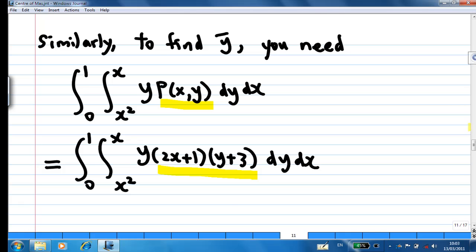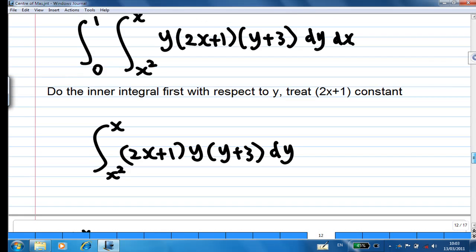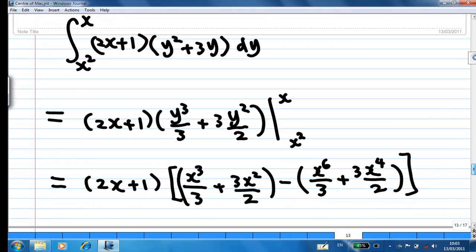So we do the inner integral first with respect to y. You treat 2x plus 1 as constant. Multiply y and y plus 3, you get y² plus 3y. And then you integrate. Integrate y², you get y³ over 3. Integrate y, you get y² over 2. And then you substitute y equal to x and y equal to x² inside.